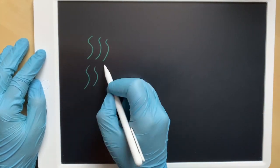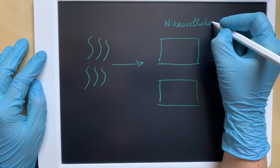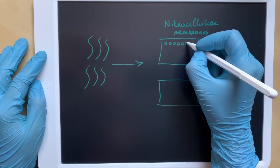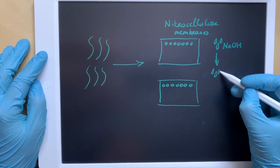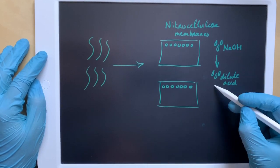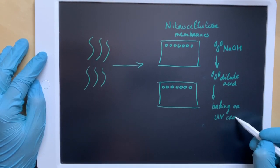The amplified DNA sample is transferred onto two nitrocellulose membranes. This is done by denaturing the DNA with sodium hydroxide, neutralizing with dilute acid, and fixing to the membrane by baking or ultraviolet cross-linking.